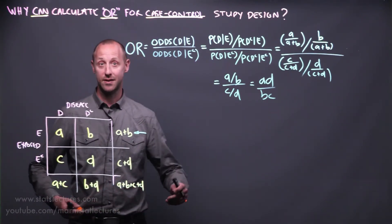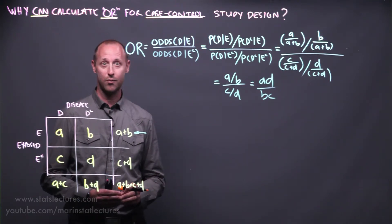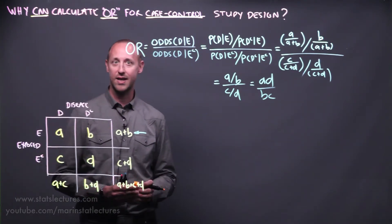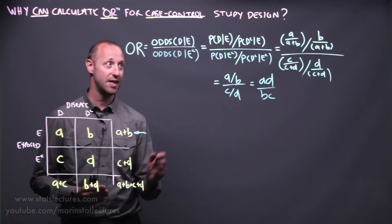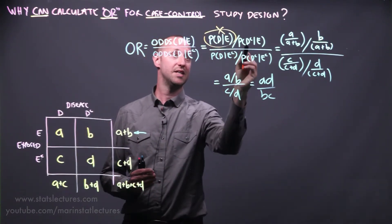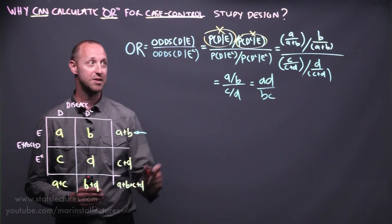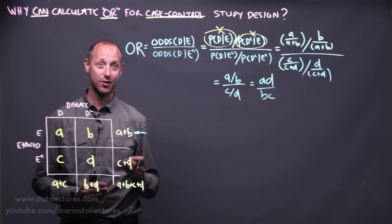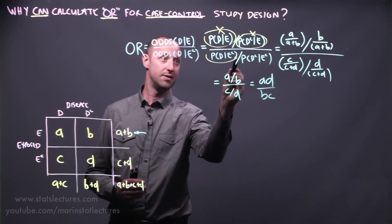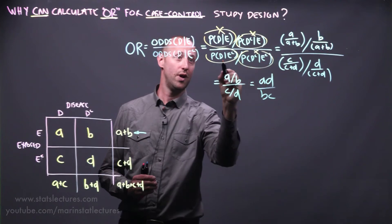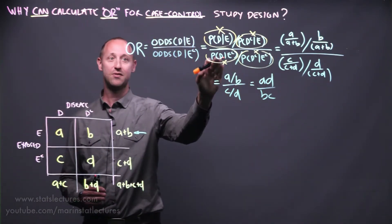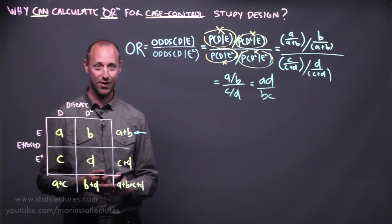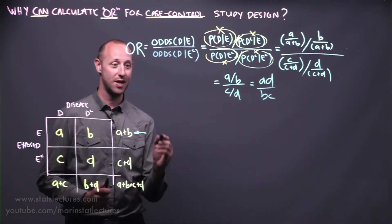Let's get back to the idea of the case-control design. In a case-control study, we select people who have the disease and people who don't have the disease, and then we ask about their exposure. When we've selected people based on disease status, we can't actually estimate prevalences — we can't estimate what's the probability of disease given you're exposed, because we've selected people based on their disease status. What's the probability of disease for someone who's not exposed? Again, we've selected them based on whether or not they're diseased. There is, however, some very convenient mathematics that works out for us.